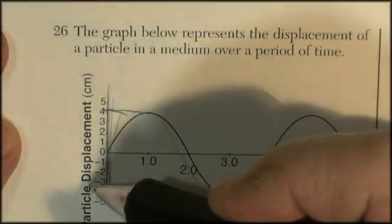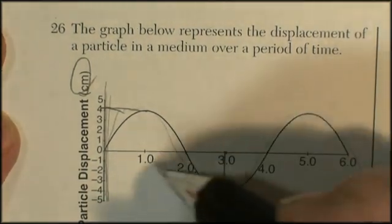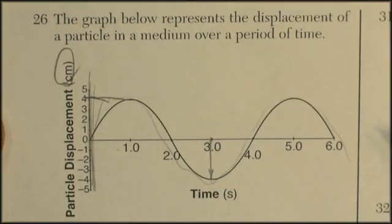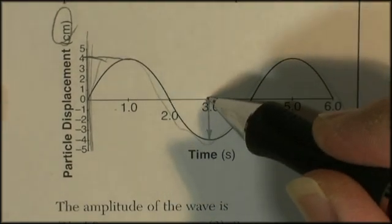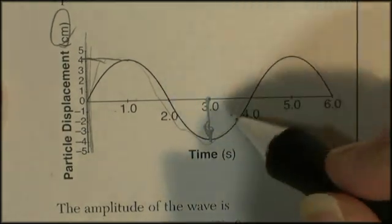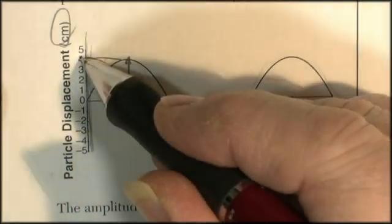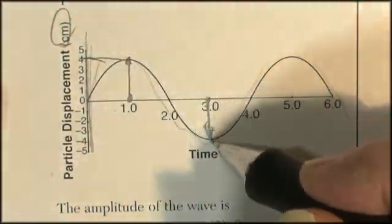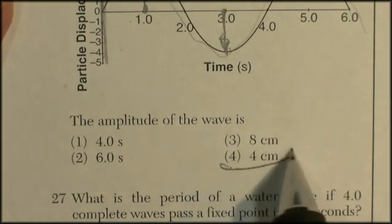We've got the displacement in centimeters and we've got the time. The amplitude is defined - this is a vocabulary question - the amplitude is defined as the distance above or below some rest position. It's 4 centimeters above, 4 meters below, so the amplitude is 4 centimeters.